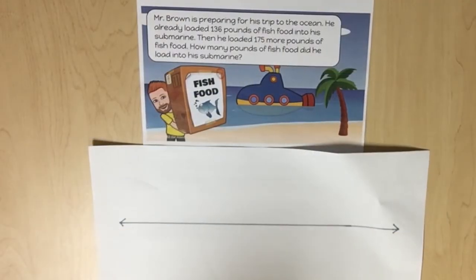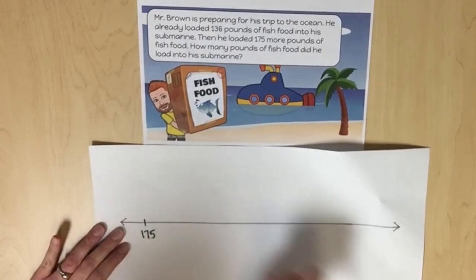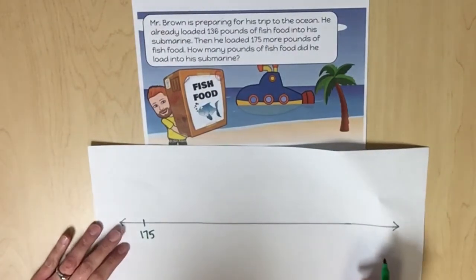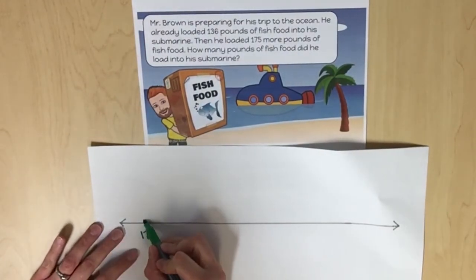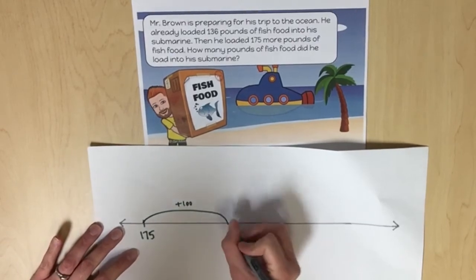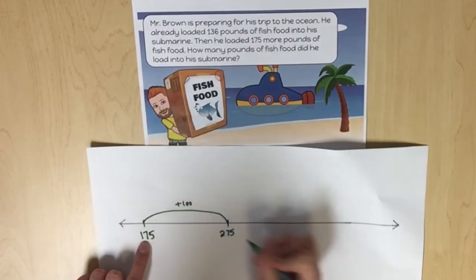Another optional strategy that students may utilize is an open number line. Students should place one known addend on the number line. The other addend should be decomposed into values that can be easily added to the known addend. So here I'm going to place 175 on the open number line and I need to add 136. I'm going to first add 100, 100 more would be 275.